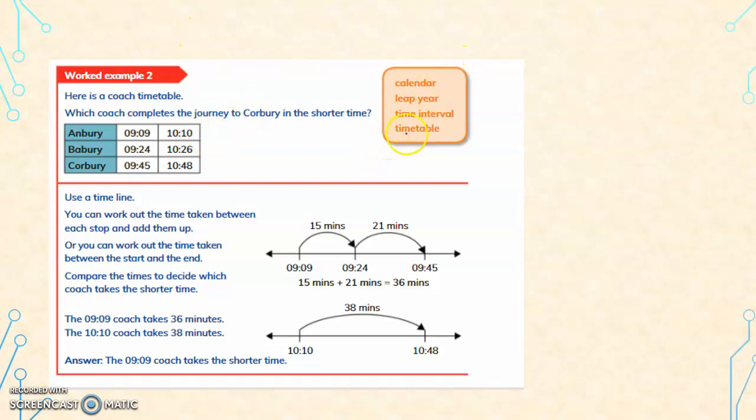Now we are going to time interval. Here is a coach timetable. Which coach completes the journey to Corbary in the shorter time? So 2 coaches are given. This is coach 1 and this is coach 2. 3 stations are given: Anbari, Babari and Corbary. The time it starts, at what time it reaches the different stations.